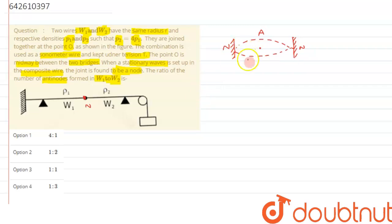We can see from here in one loop there is one anti-node. Accordingly, we can check in two loops there will be two anti-nodes. So as the number of loops increases, number of anti-nodes increase.